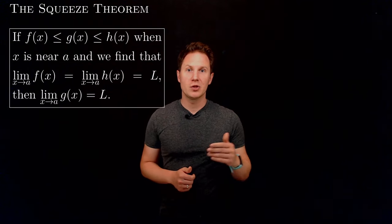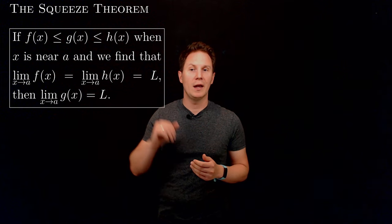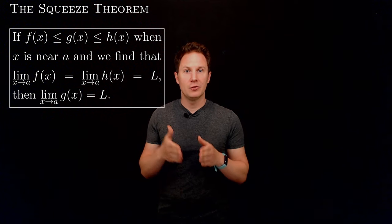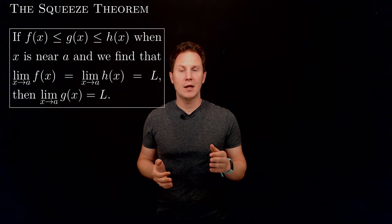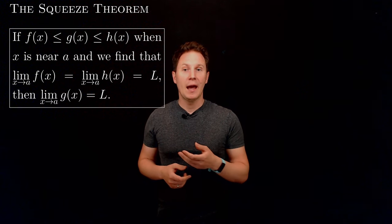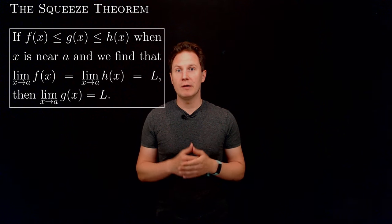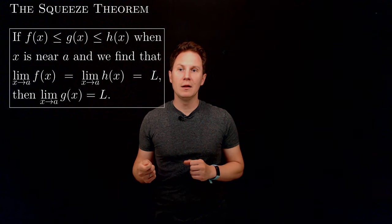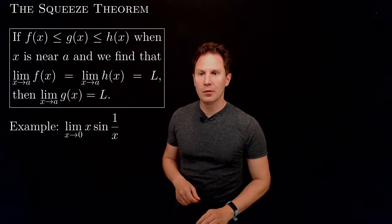If we have three functions f, g, and h which are related to one another in such a way when x is near a, namely g(x) is sandwiched between f(x), which is the lower bound, and h(x), which is the upper bound, and we know that the limits of the bounds exist and are equal, then the theorem says that the limit of the function in the middle must also be that same number l. Here's an example.